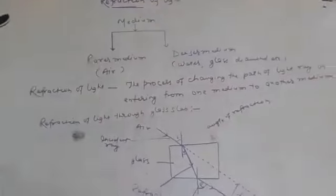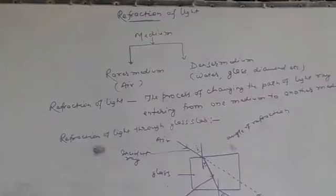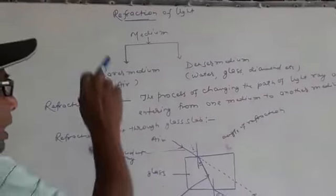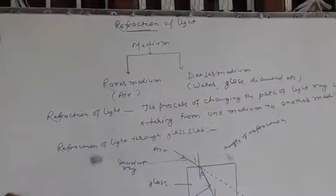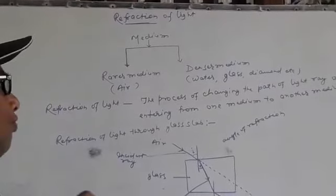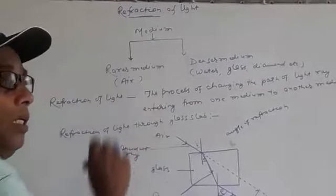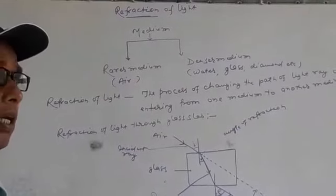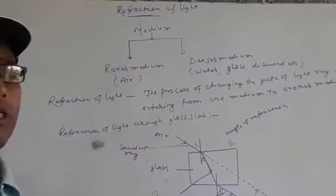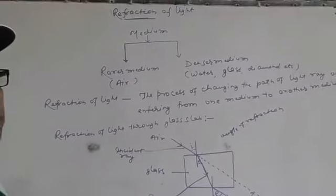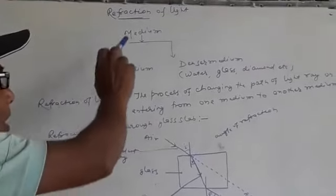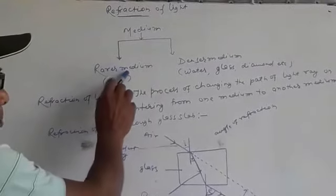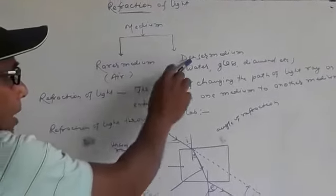Refraction of light. But before knowing refraction of light, I have to explain medium. Medium means the material or substance through which light can travel. And on the basis of light, there are two types of medium: rarer medium and denser medium.